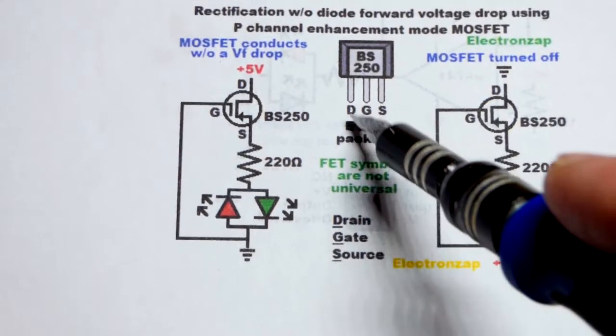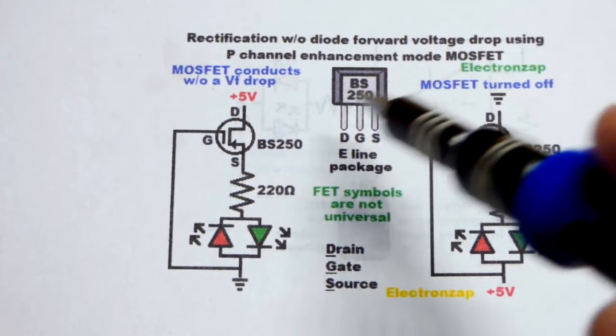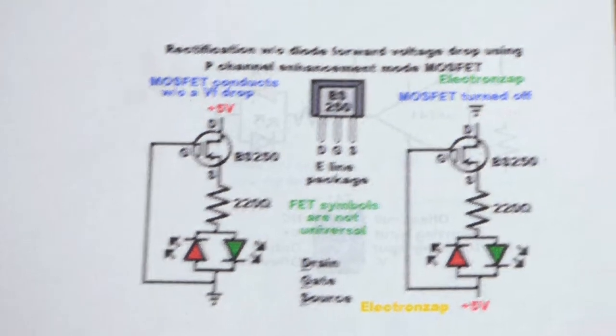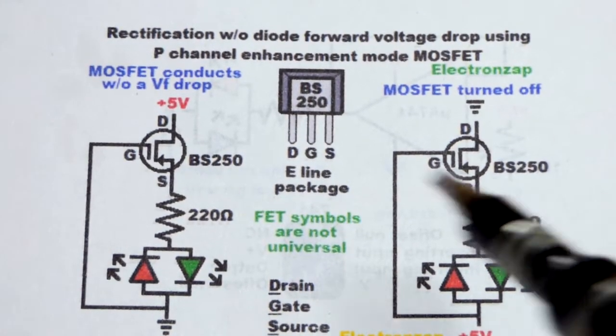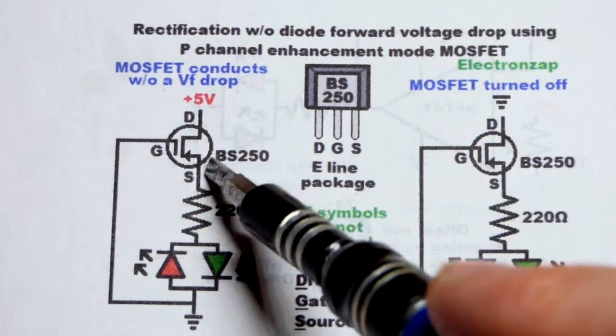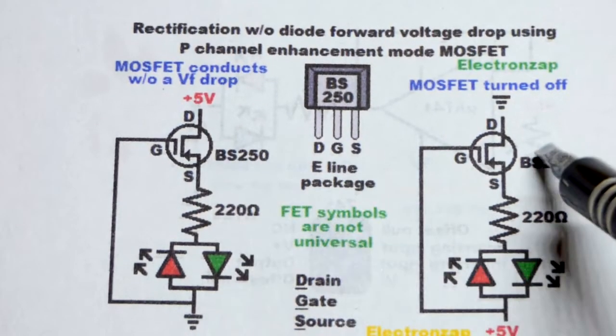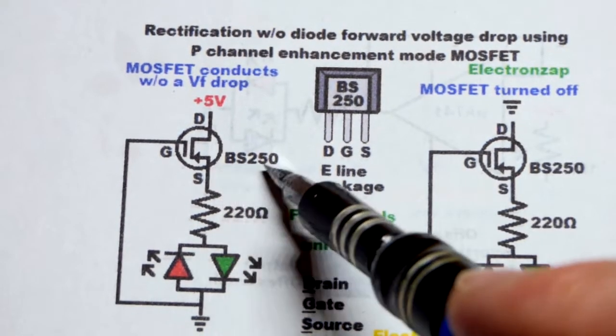I wrote the name of the pins: drain, gate, source. Drain, gate, source right there. Again, as a reminder, when it comes to field effect transistors—FETs, JFETs, or MOSFETs—the schematic symbols are not universal. Different people use different schematic symbols. This is the one I like. Just be aware of that. Hopefully there's a part number there so you can Google it.